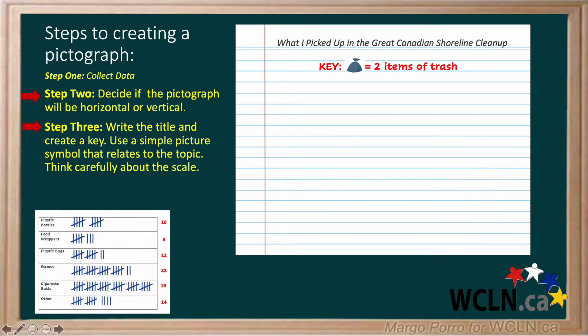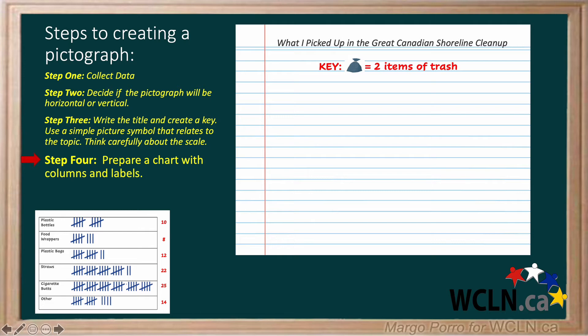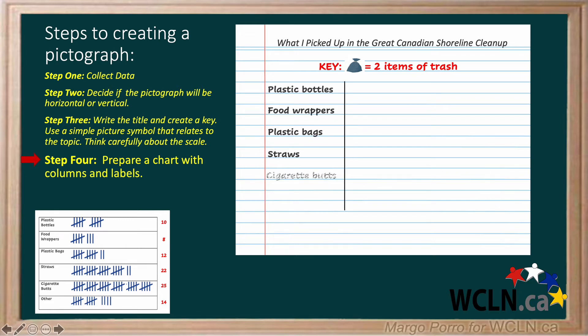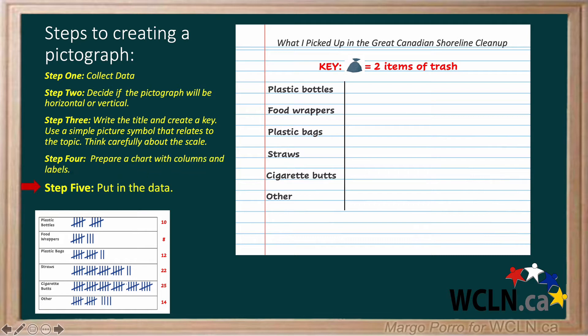Now let's look at step 4: Prepare a chart with columns and labels. For a horizontal pictograph, two columns are needed — a smaller one on the left for the category labels and a larger one for the symbols. Holly had 6 categories, so her chart needs to be 6 lines long. But she leaves a space between each category, so she doubles 6 and uses 12 lines. She adds her labels to complete step 4, and now she is ready for step 5.